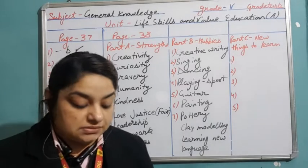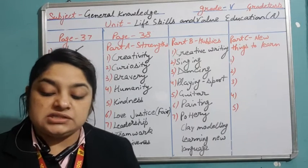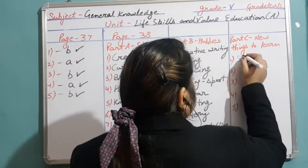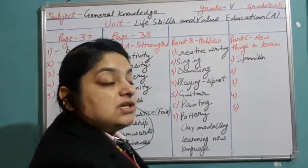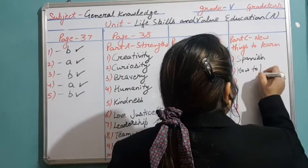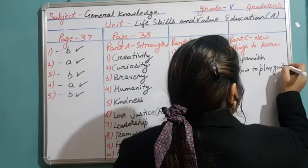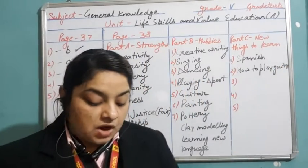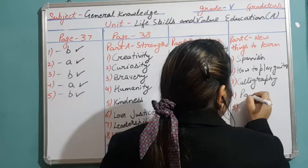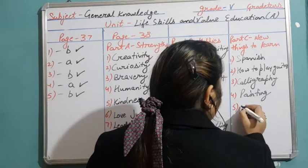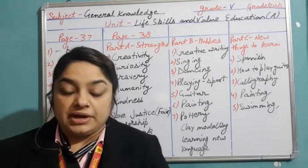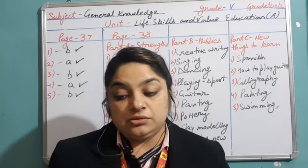Next, write a few new things that you wish to learn. For example: learning a new language like Spanish or French, how to play guitar or another instrument, calligraphy, painting, or a particular sport like swimming. These are just a few examples — you can write anything else that interests you. Now moving on to Chapter 32: On a Journey.